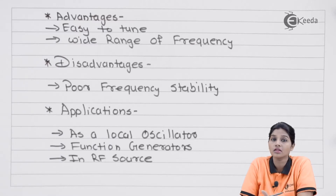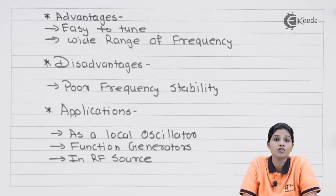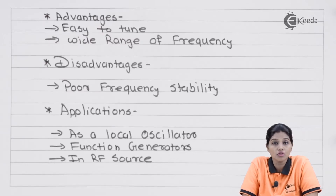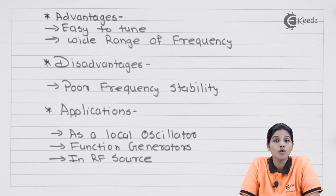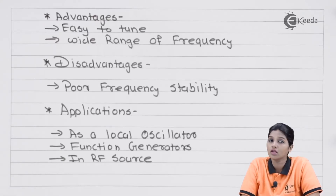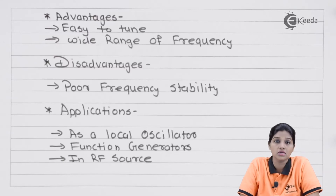The disadvantage of the circuit is poor frequency stability. This is because of the effect of temperature, humidity, and changes in the parameter values of the inductor and capacitor. In the case of LC oscillators, the frequency depends on the values of inductor and capacitor — f = 1/(2π√(L_eq × C)) — so if the component values change due to any of these effects, the frequency will be affected and frequency stability decreases.